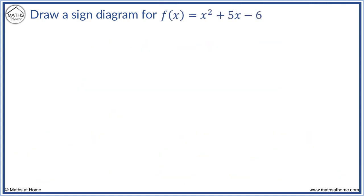Here we have f of x equals x squared plus 5x minus 6. We can factorize this as brackets x plus 6 brackets x minus 1 and we set the function equal to 0. When x plus 6 equals 0, we get x equals minus 6. When x minus 1 equals 0, x equals 1.